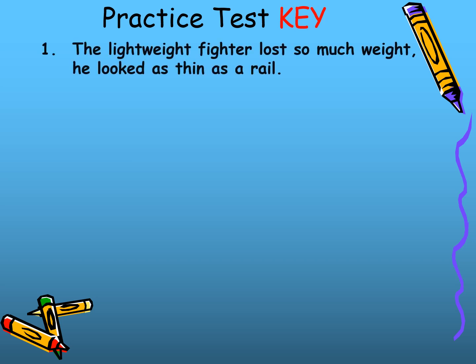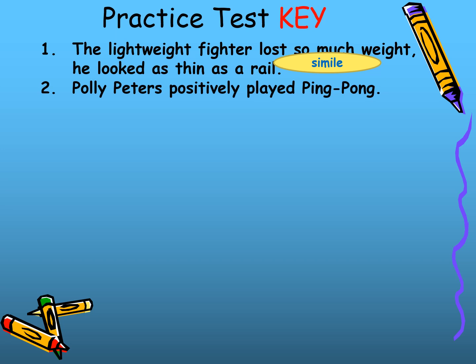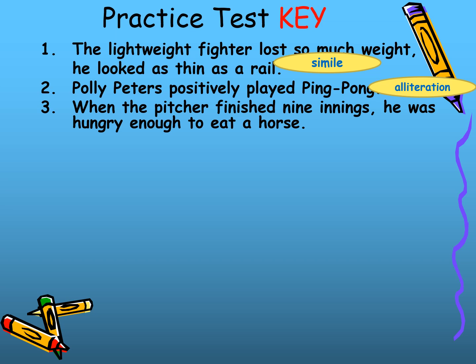Another practice: 'The lightweight fighter lost so much weight he looked as thin as a rail' — it's a simile; the poet compares the lightweight fighter to a rail using 'as.' 'Pali Peters possibly played ping pong' — there is alliteration; the writer repeats the consonant P in 'Pali,' 'Peters,' 'possibly,' 'played,' 'ping,' and 'pong.' 'When the pitcher finished nine innings, he was hungry enough to eat a horse' — it's a hyperbole; the poet exaggerates that the person could eat a horse to clarify that he was very hungry.